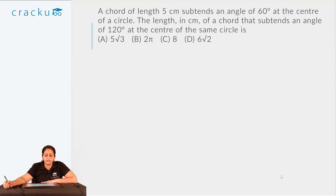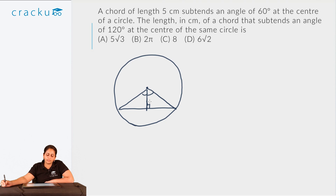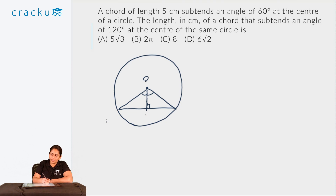Now let's look at the next question. A chord of length 5 cm subtends an angle of 60 degrees at the center of a circle. The length of a chord that subtends an angle of 120 degrees at the center of the same circle is what? Let's draw the configuration: we have chord AB of 5 cm subtending 60°. The line joining the center to the midpoint M of the chord is a perpendicular bisector, so AM = MB = 2.5 cm and the half-angle is 30 degrees.